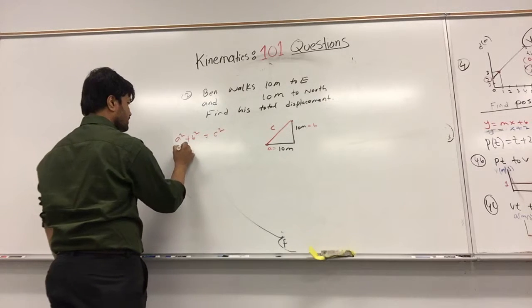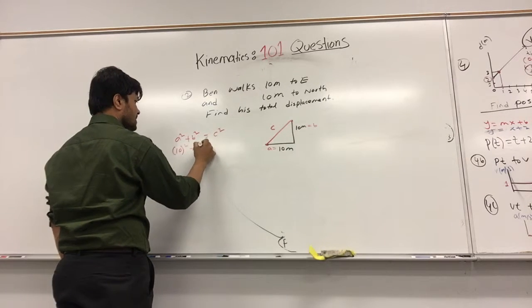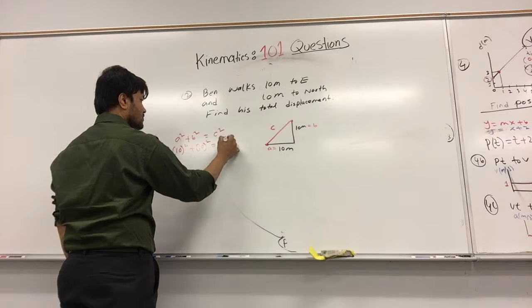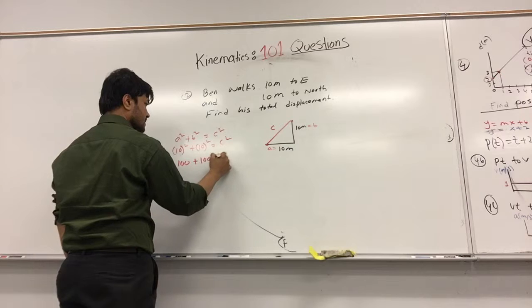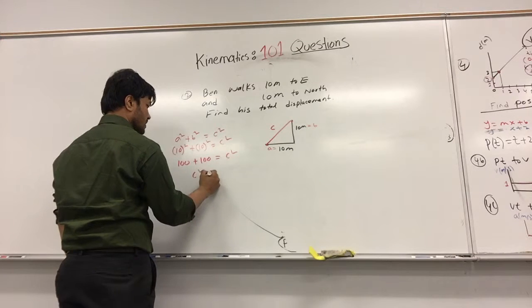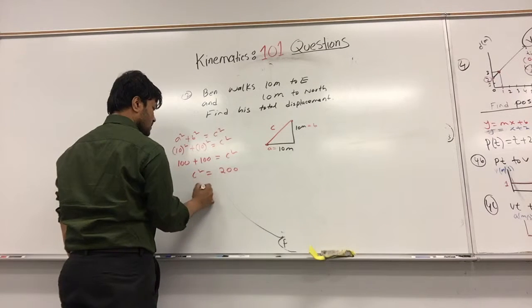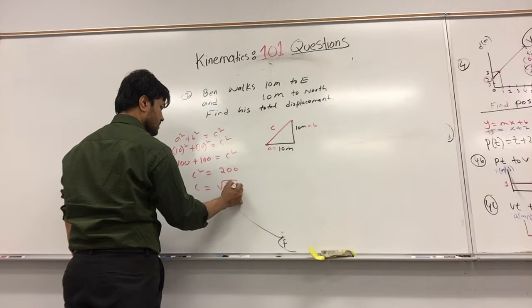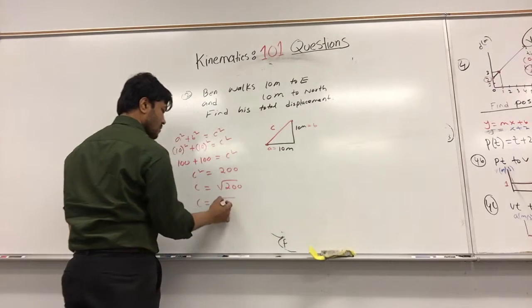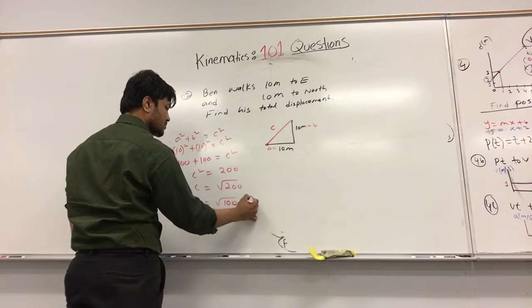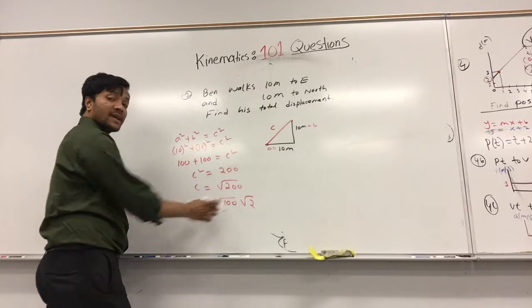A is 10 squared plus 10 squared, that's 100 plus 100. C squared equals 200, so C is the square root of 200. That's the square root of 100 times the square root of 2. The square root of 100 is 10.